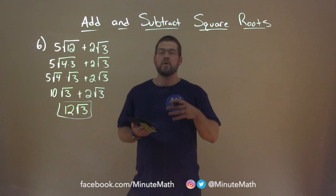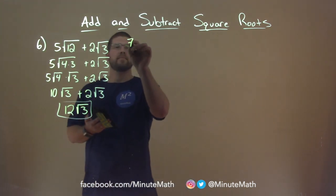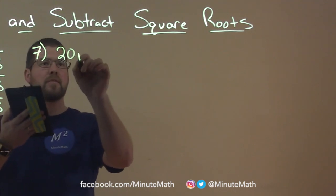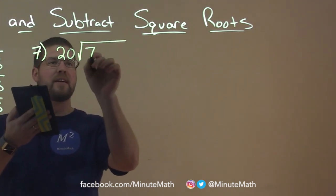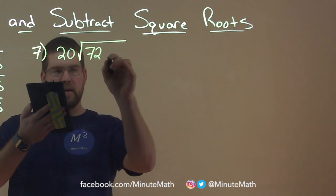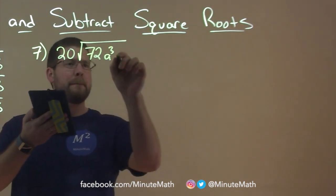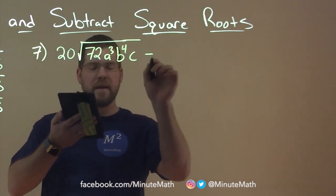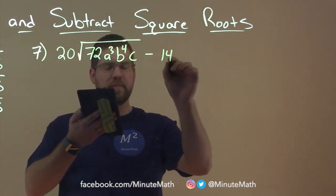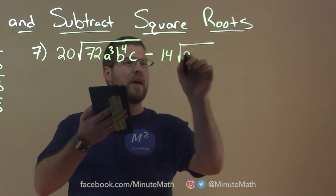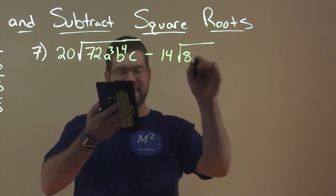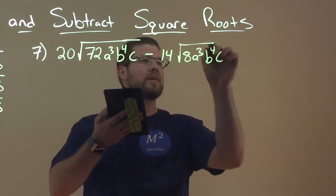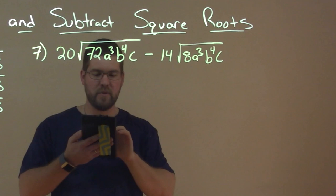So now let's deal with subtraction. And we have a harder problem here: 20 times the square root of 72 a to the 3rd power, b to the 4th power, c, minus 14 square root of 8 a to the 3rd power, b to the 4th, times c. Let me zoom in here so I can read it better.